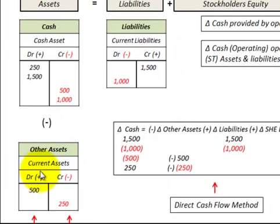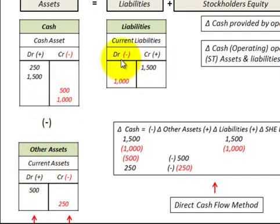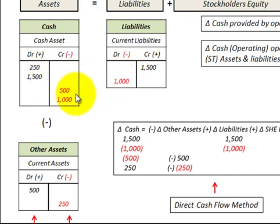Looking at debits and credits in our T-accounts: an increase in current assets — a debit amount — would be a credit, or reduction, in our cash. An increase in our liabilities would be an increase in our cash. A reduction in current liabilities would be a reduction in cash, and any reduction in our current assets would be an increase in our cash account.